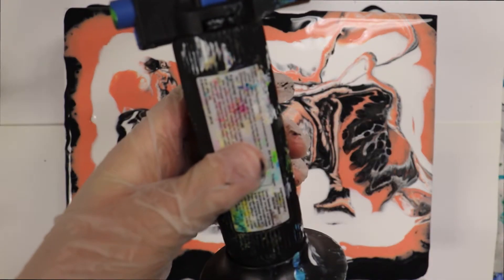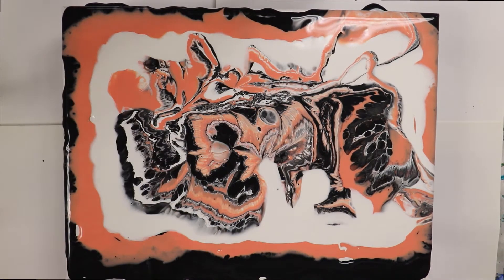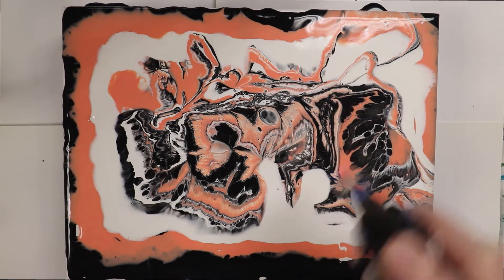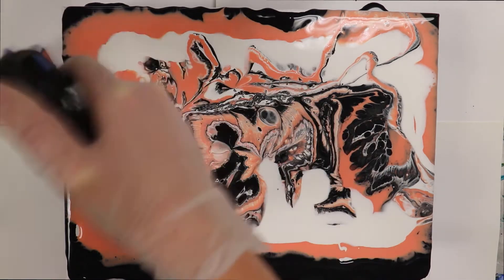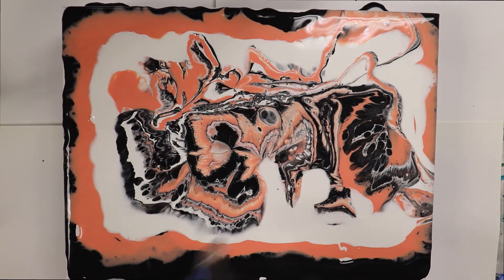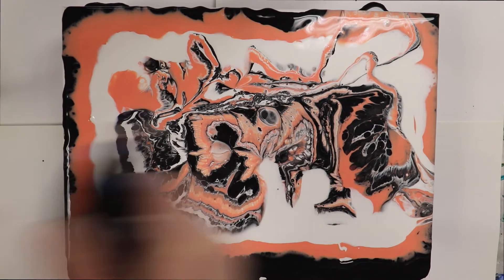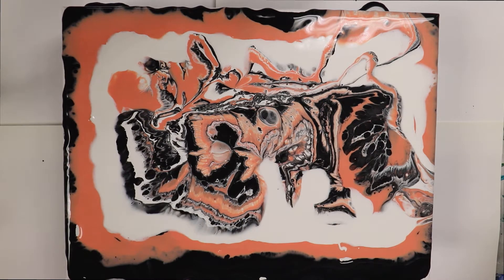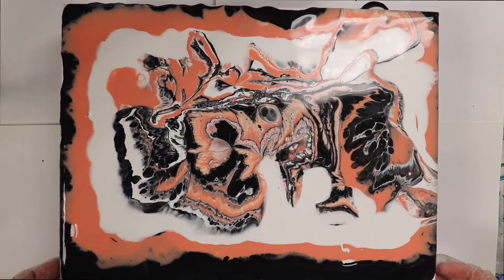This is a blow torch. I use this to bring that silicone that I mixed in the paint to kind of bring it to the surface and that's what creates those little bubbles that pop up and make the little circular cells. So you just very quickly run that across the surface a couple inches away. You don't want to burn your paint.